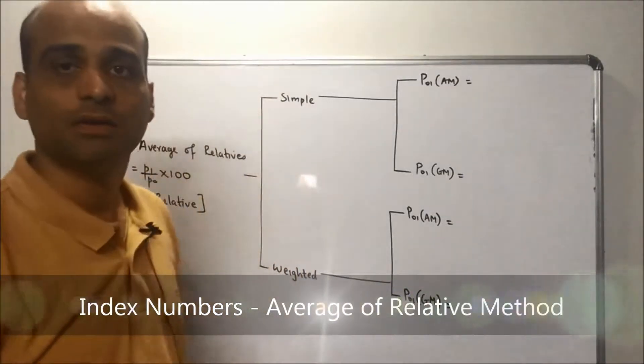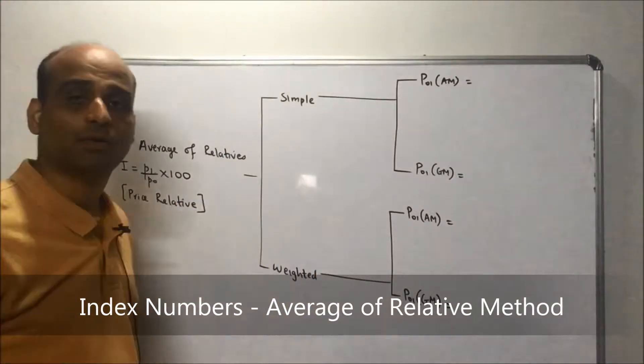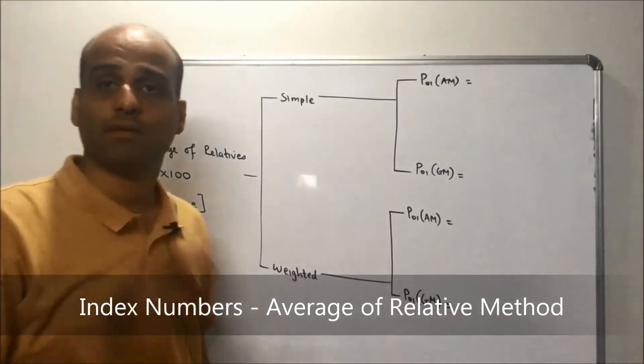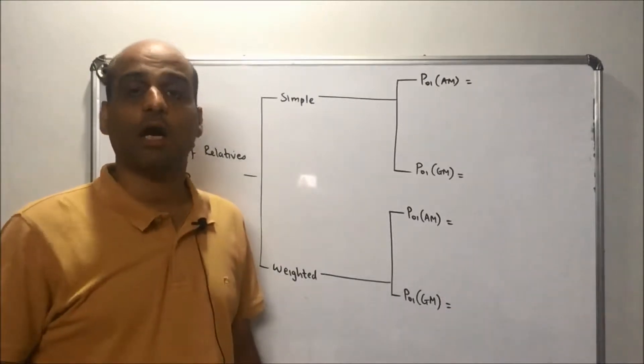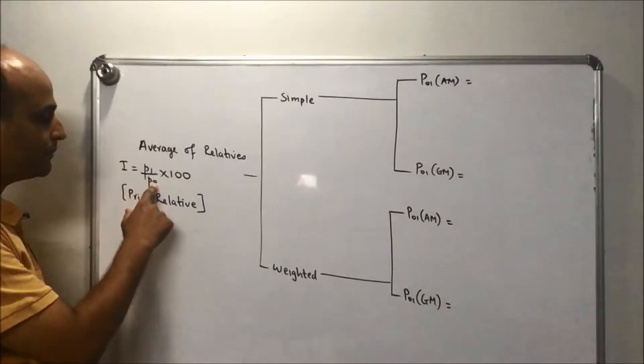We now proceed to the average of relatives method. In this method you need to calculate the price relatives in the first place. How would you define a price relative? It is nothing but P1 upon P0 into 100, that is current price over base price into 100.